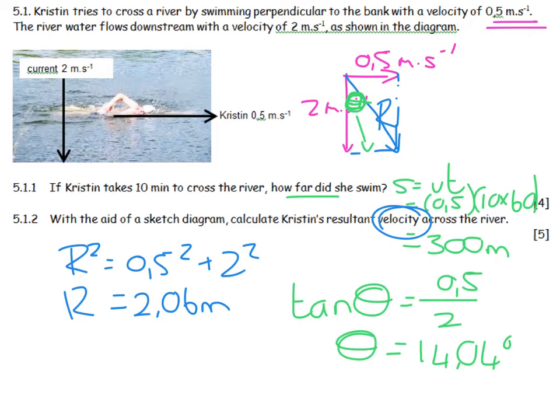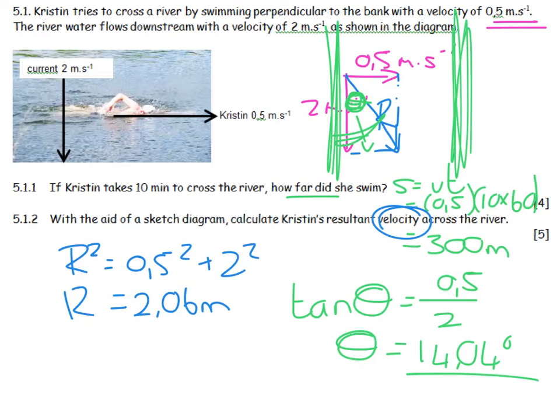Now, relative to what? 14.04 degrees. I wasn't overly strict, but in future I will be. This is the bank. The current flow is parallel to the bank of a river. So this angle is 14.04 degrees from the bank. If you decided to go with the 65.96 or whatever many of you got, you then need to say that it is that angle relative to what she tried to swim.